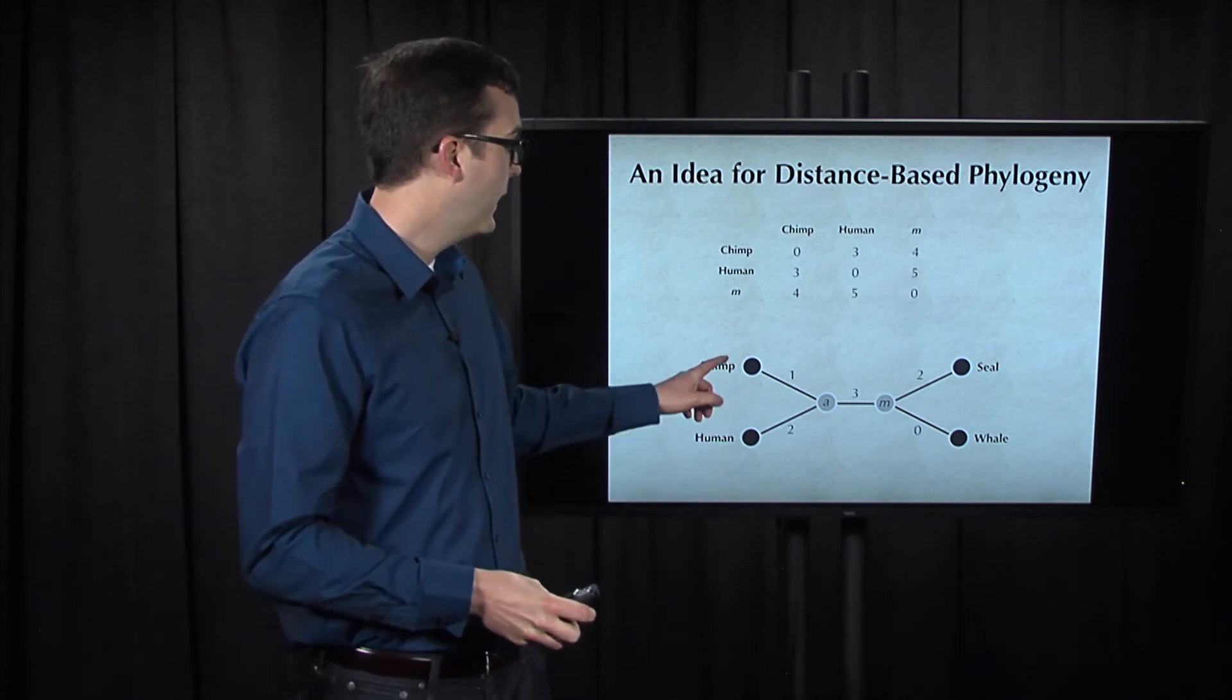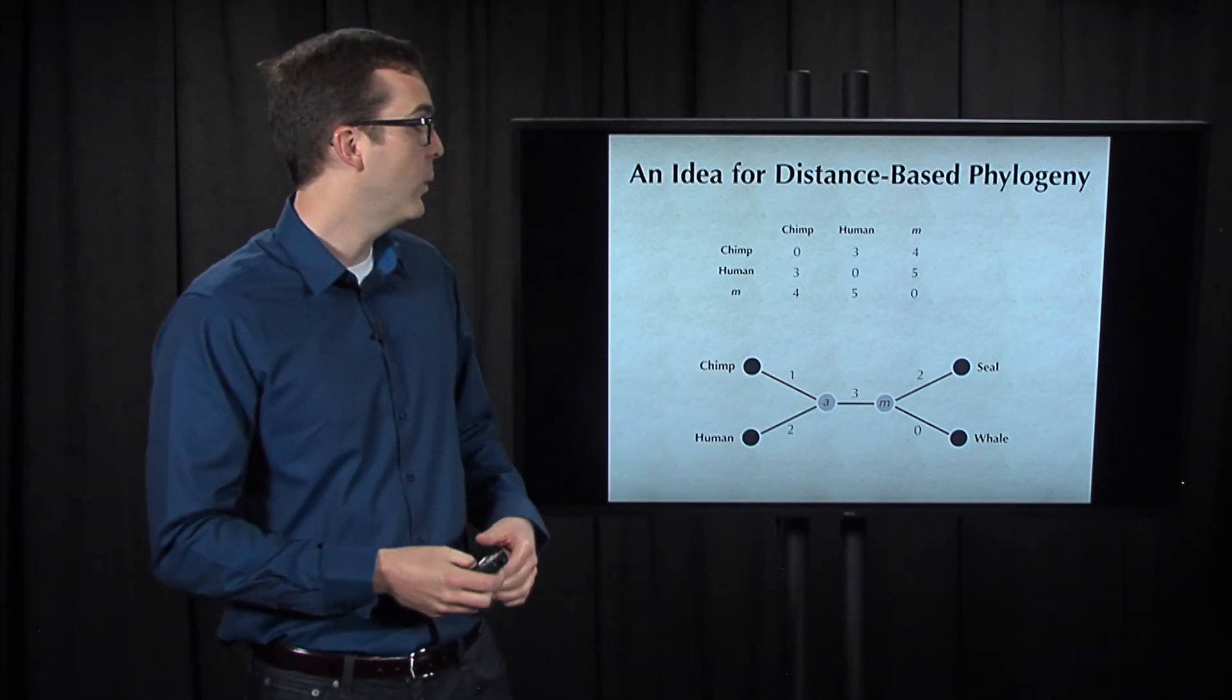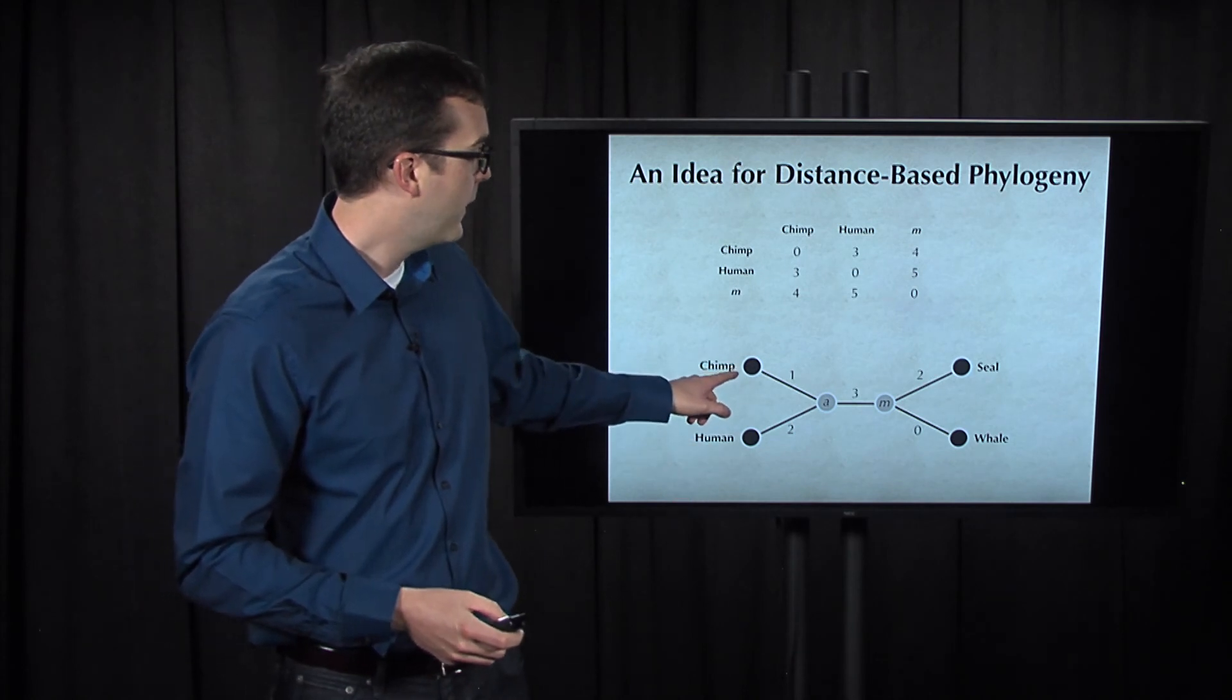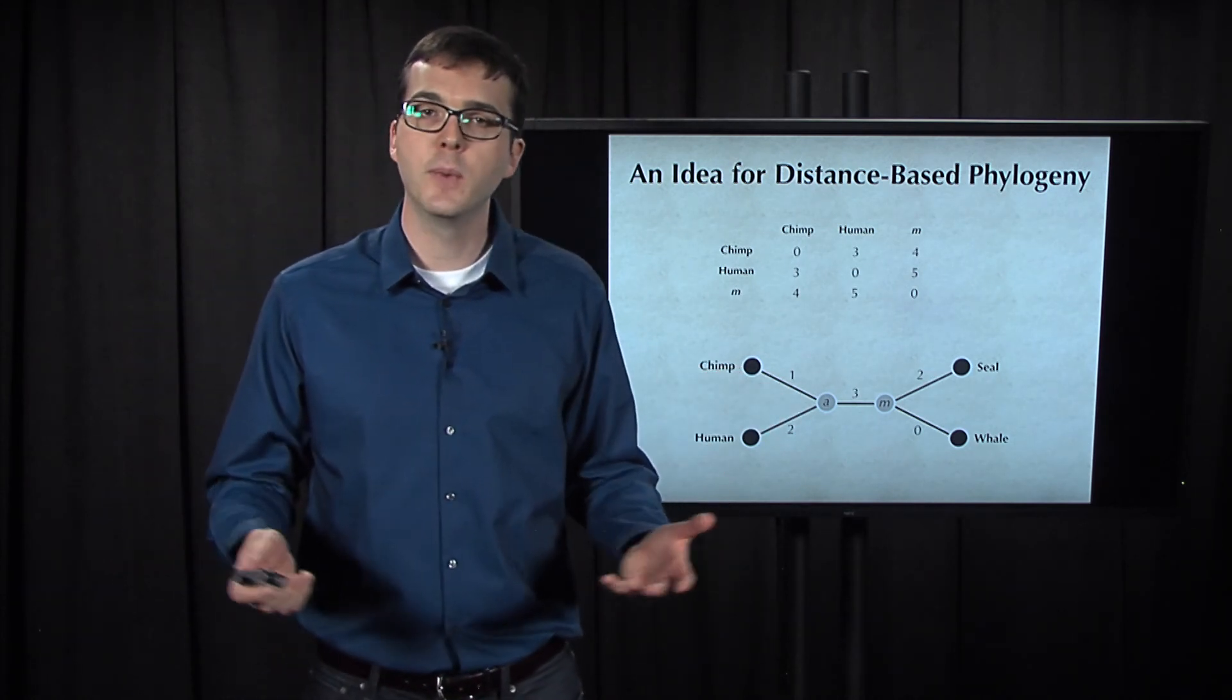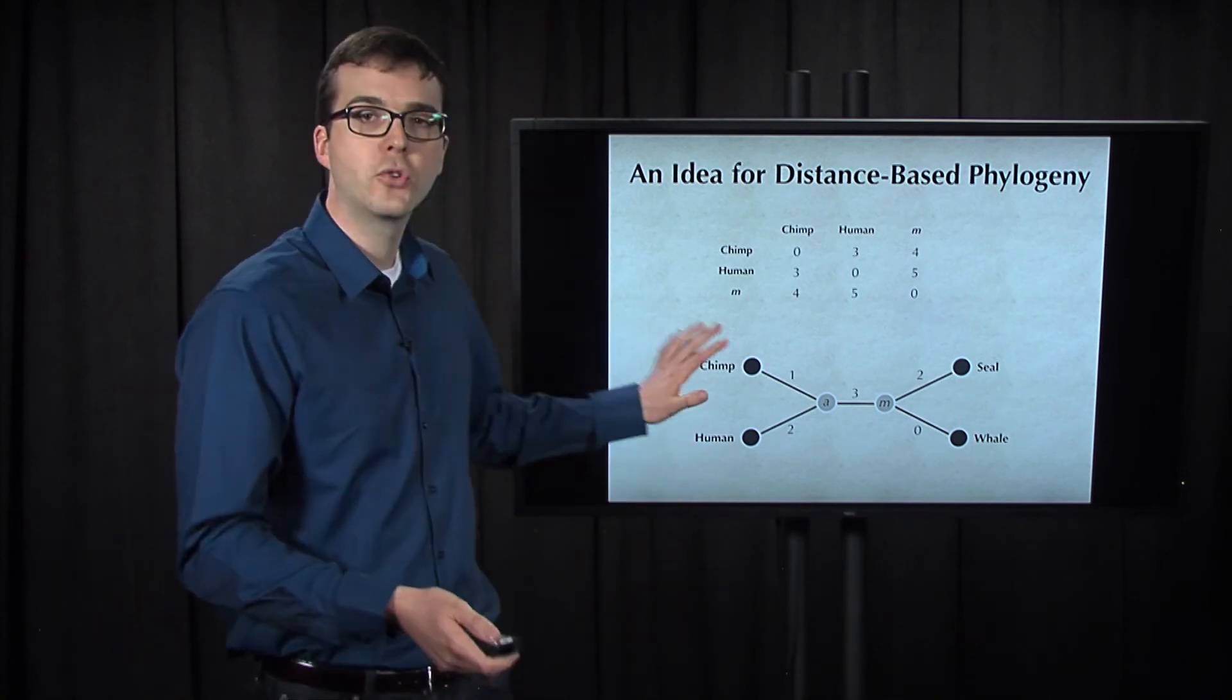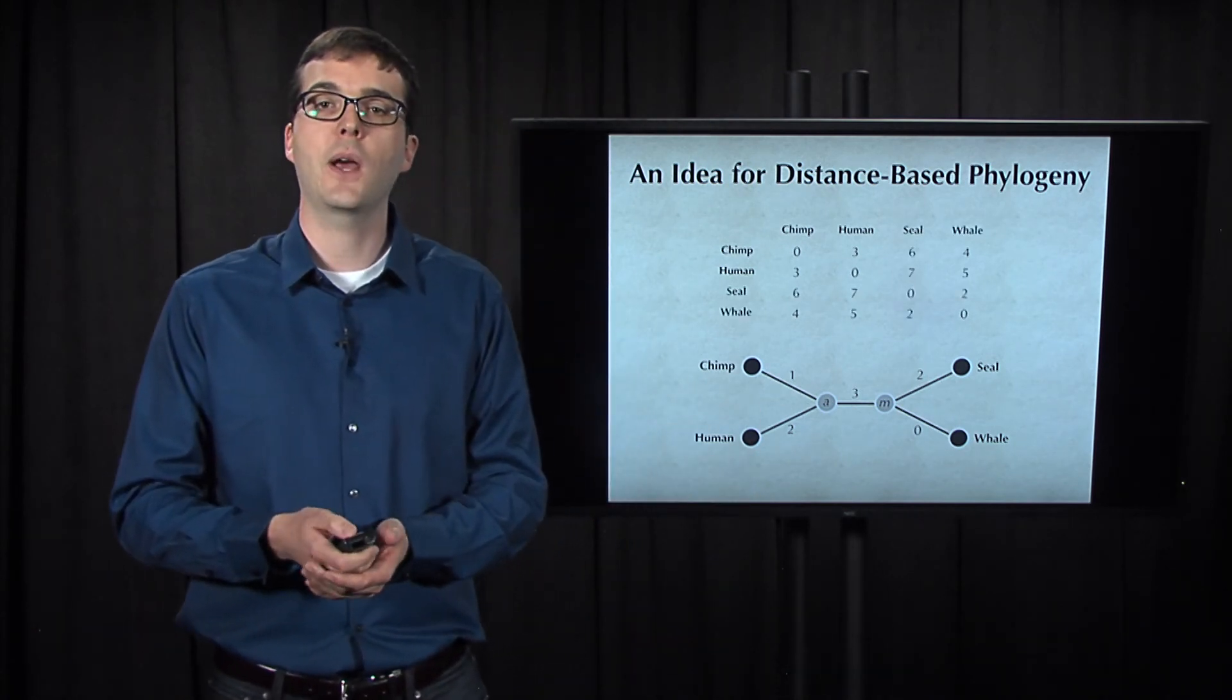And now we can conclude that the distance from a to m must be equal to 3 as well, because we knew that the distance from chimp to m was equal to 4, and we just computed that the distance from chimp to a was 1. So the remaining edge must be 3, and that's the simple tree that I showed you before that fits our original matrix.